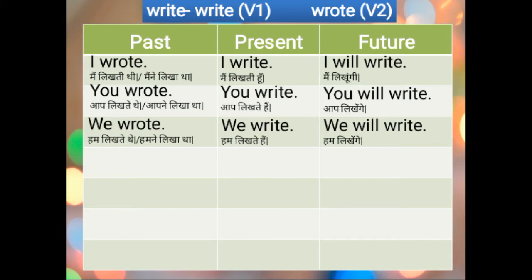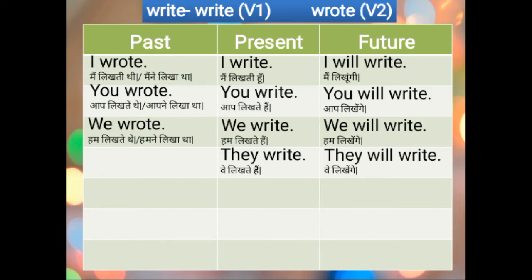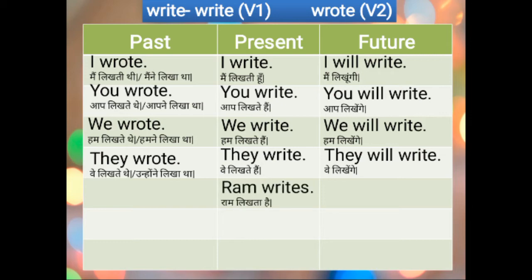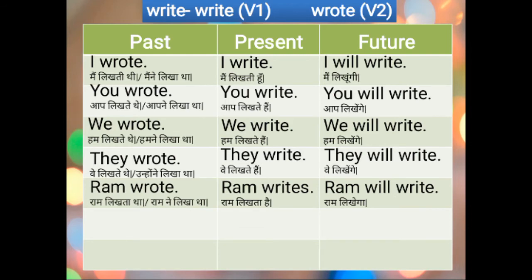We WRITE, we WILL WRITE, we WROTE. They WRITE, they WILL WRITE, they WROTE. Now please remember the S rule — RAM WRITES — because RAM falls in the he/she/it category, being a single male person. So WRITE takes an S: RAM WRITES, not RAM WRITE. RAM WILL WRITE — the S rule does not apply in the future tense, only in the present. RAM WROTE — and again, we don't use the S rule in the past tense.